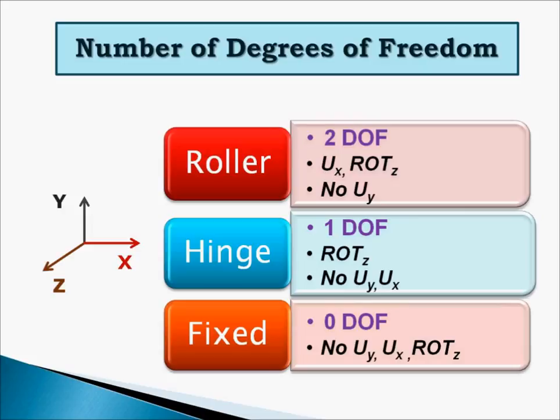Hinge support has only one degree of freedom, and that is rotation ROTz. But fixed support has no degrees of freedom. That means there is no movement at all at fixed support.